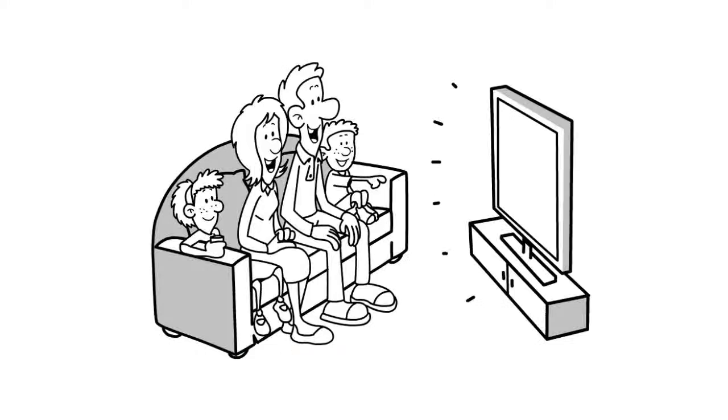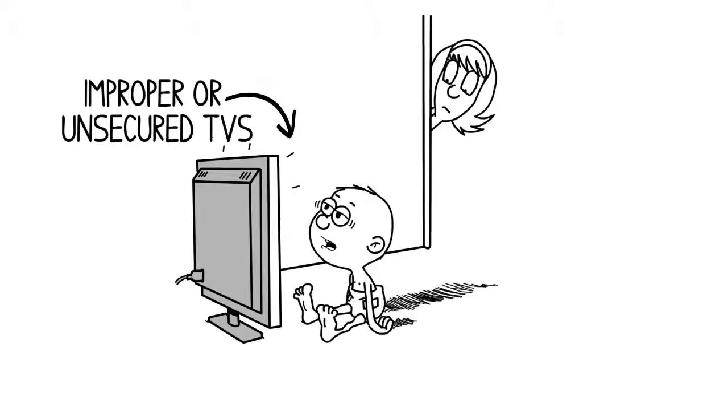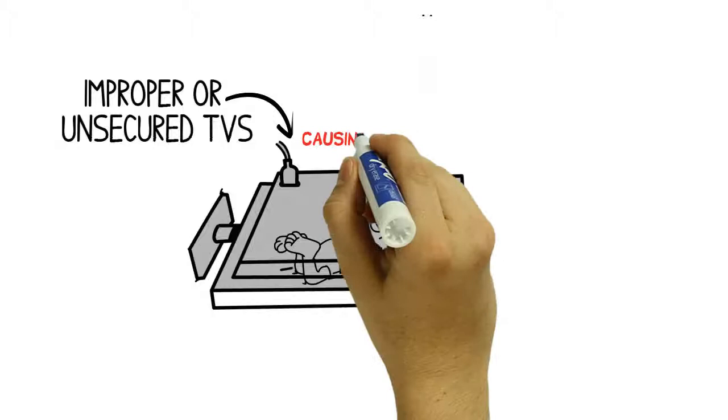But most families don't know the danger they pose to the children we enjoy them with. Improper or unsecured TVs can cause harm. A simple bump, tap, touch or unexpected incident can cause an improper or unsecured TV to fall or tip over causing serious injury or death.